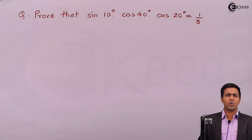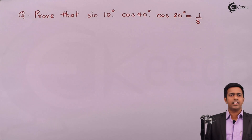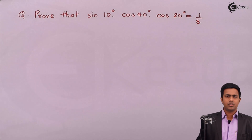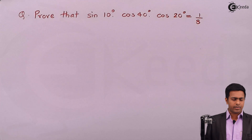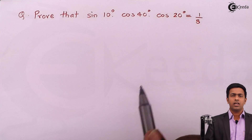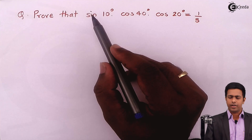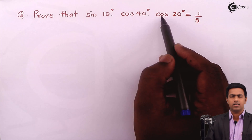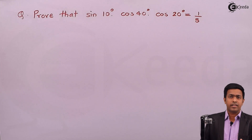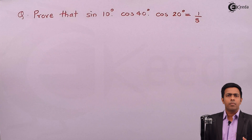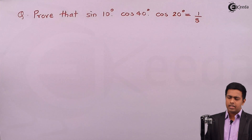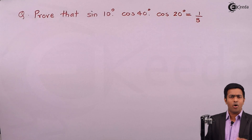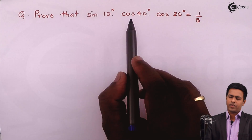Hello students. In this problem we have to prove that sin(10°) · cos(40°) · cos(20°) is equal to 1/8. To prove that these trigonometric terms multiplying each other equal 1/8, we should not evaluate using a calculator — that is not allowed in examination. We should prove it mathematically.